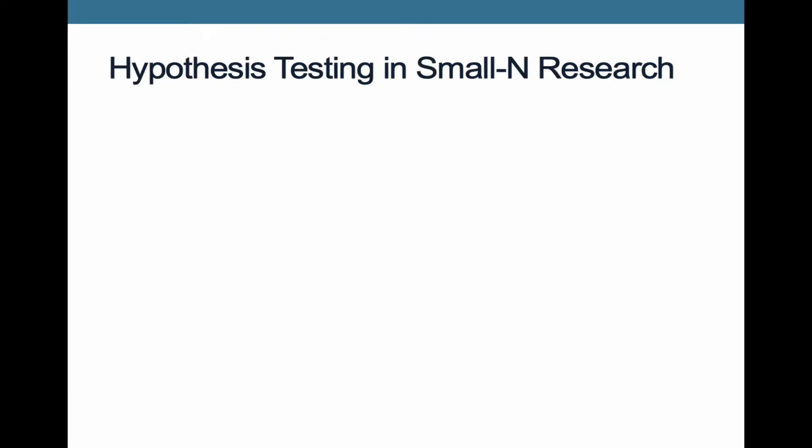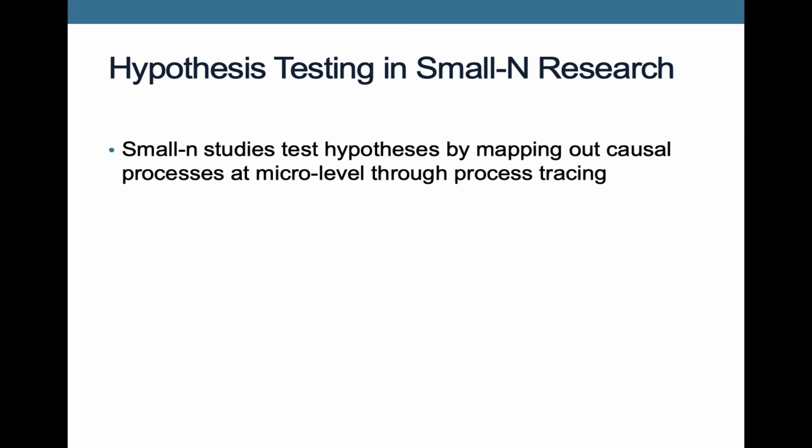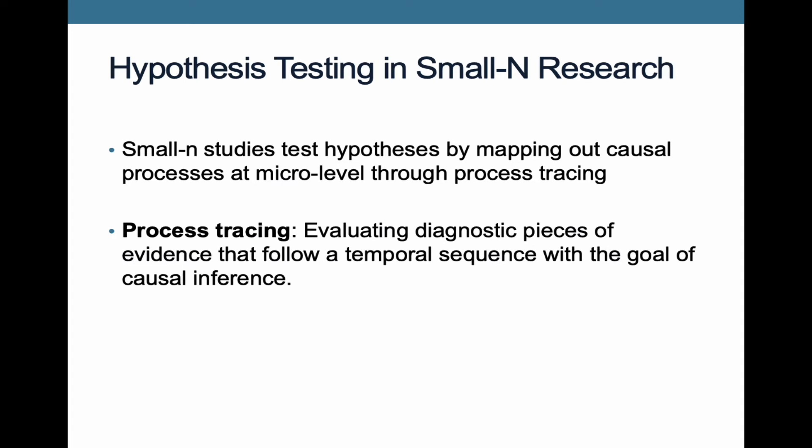Hypothesis testing in small-N research looks at testing hypotheses by mapping out causal processes at a really fine-grained micro level through what we call process tracing. Process tracing is the process of evaluating diagnostic pieces of evidence that follow a temporal sequence, with the ultimate goal of causal inference. There are three parts to this: evaluating diagnostic pieces of evidence, the temporal sequence, and the goal of causal inference.